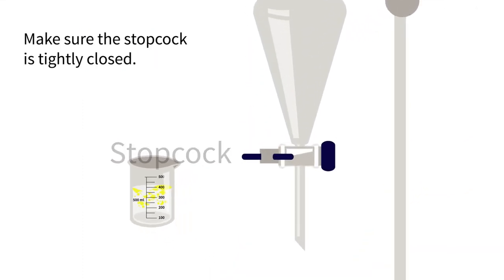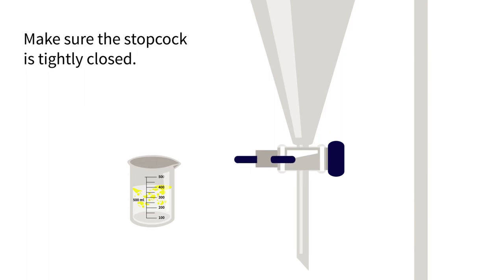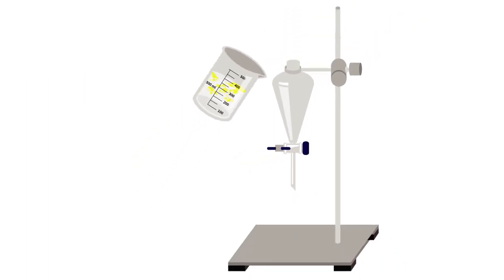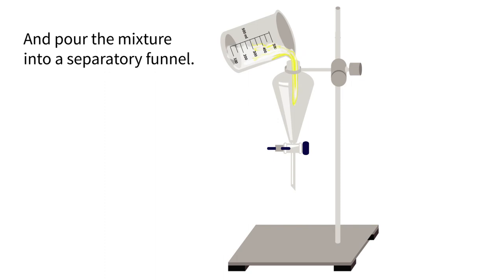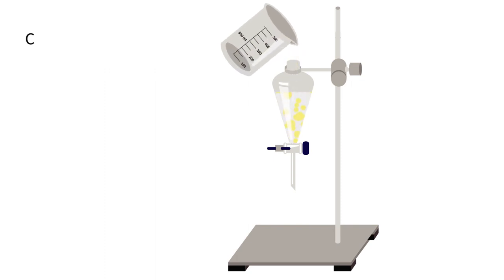Make sure the stopcock is tightly closed and pour the mixture into a separatory funnel. Close the funnel with a stopper and allow the mixture to stand for a while.